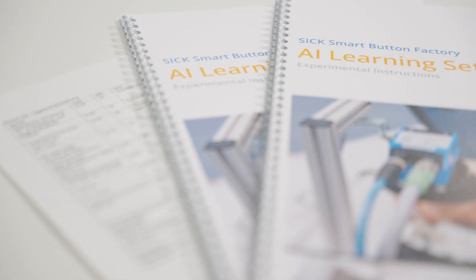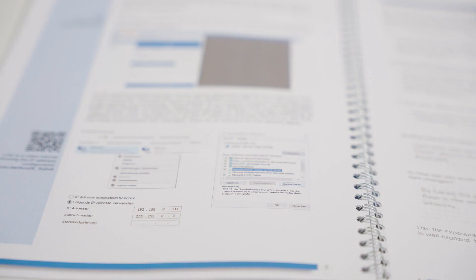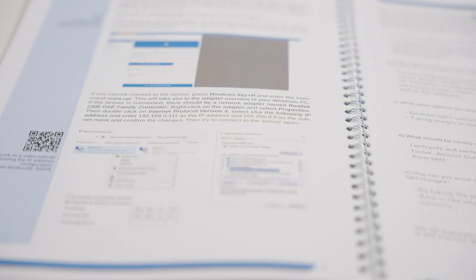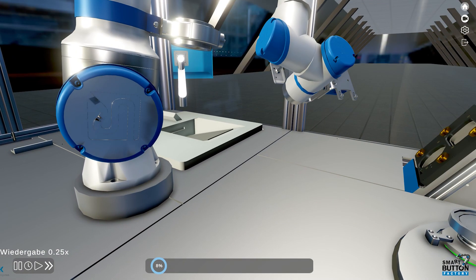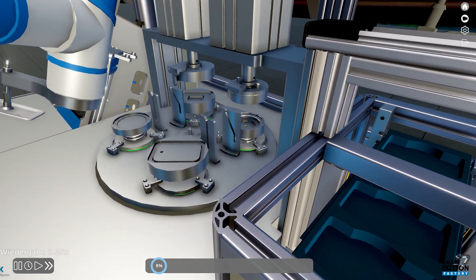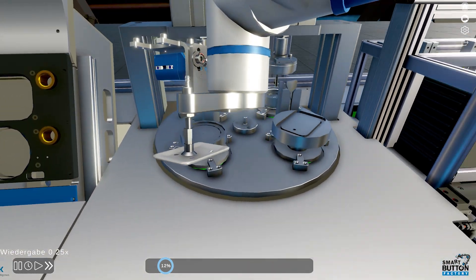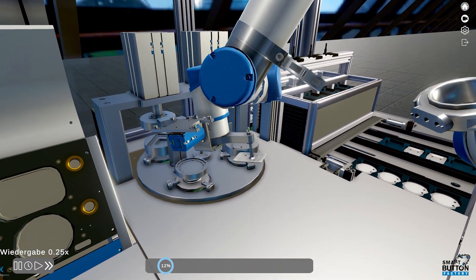These documents consist of a student's book with exercises, a teacher's book with detailed instructions and sample solutions, as well as a teacher's guide that helps preparing classes. Also included is a high quality simulation software that simulates a real pin button factory that can be used to test the neural networks.